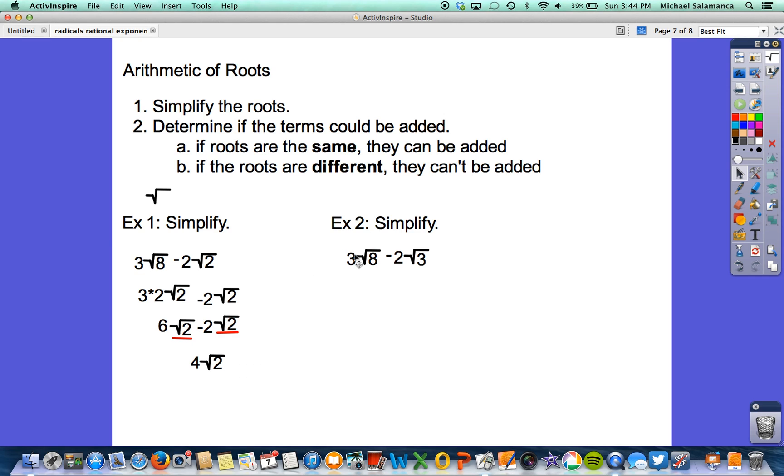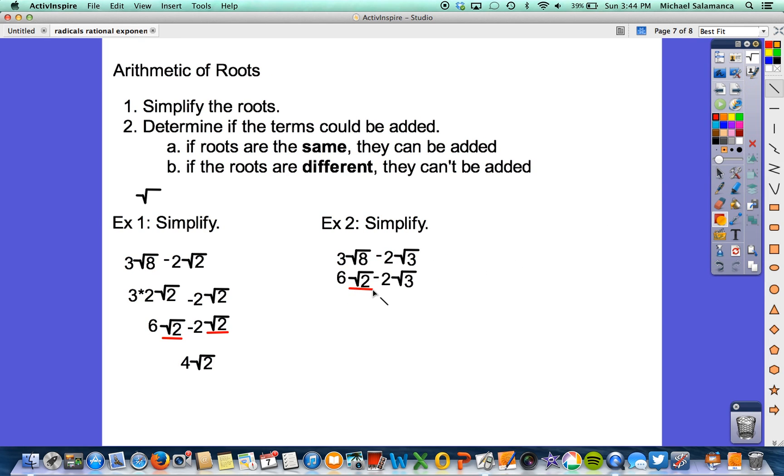So if we look at example 2, we're going to do the same exact thing. So we know 3 square root of 8 is 6 square root of 2. And then we're going to subtract by 2 square root of 3. So this should be very easy to notice. Notice how both of their roots are different. One is square root of 2. One is square root of 3. Because they're not the same, you're automatically done. There's nothing else we can do to this, so don't force it. We're done.